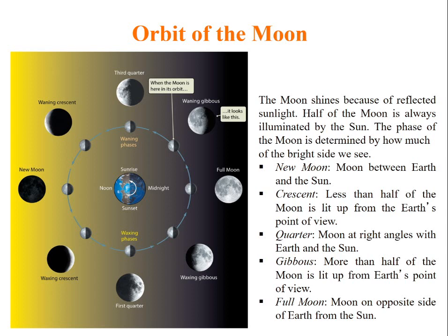We can learn phases of Moon. New Moon: Moon is between Earth and the Sun. Crescent: less than half of the Moon is lit up from Earth's point of view. Quarter Moon: Moon is at right angles with Earth and Sun. Gibbous: more than half of the Moon is lit up from Earth's point of view. Full Moon: Moon is on the opposite side of Earth from the Sun.